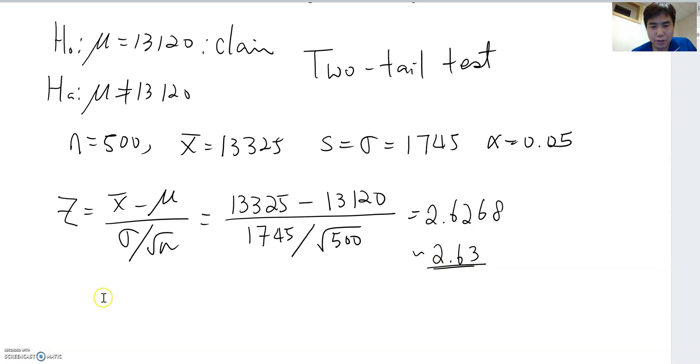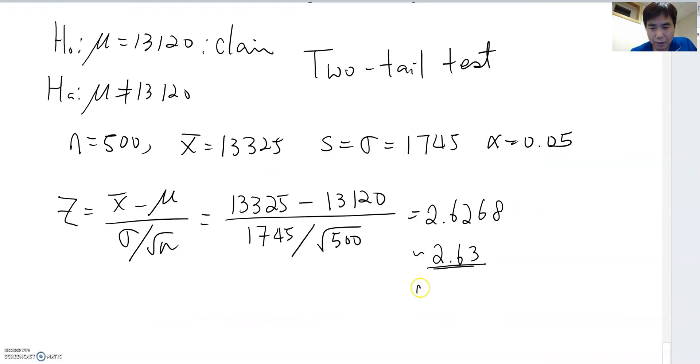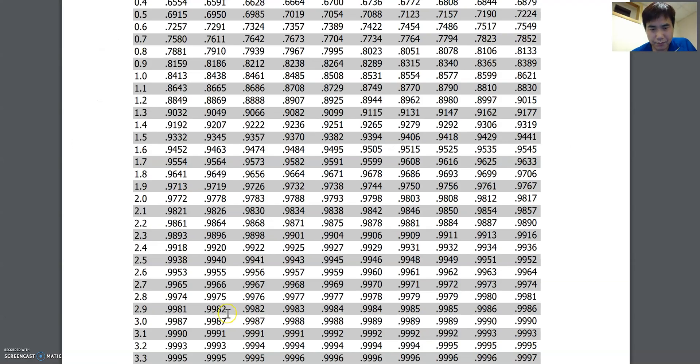Reading Z table 2.63. 2.63 is 0.9957. So we got 0.9957. I will double check.